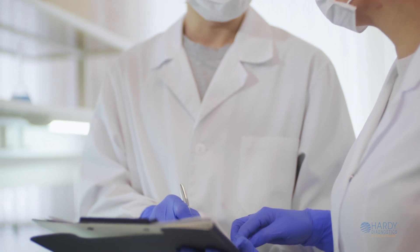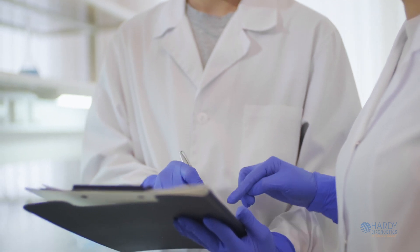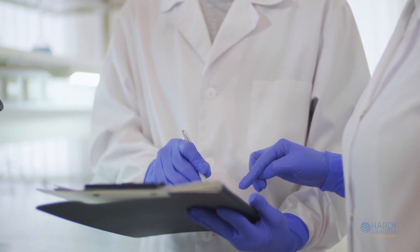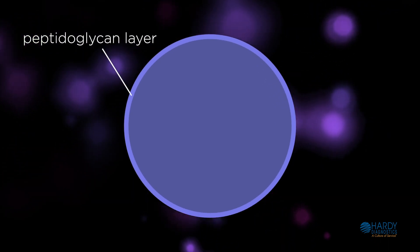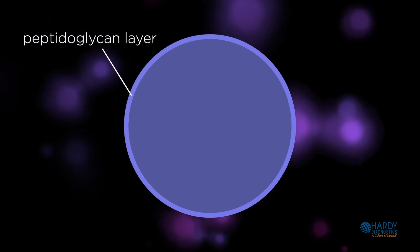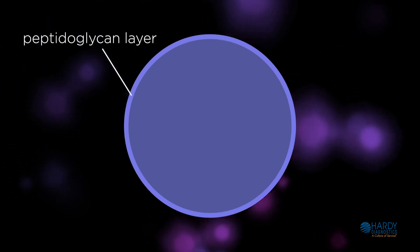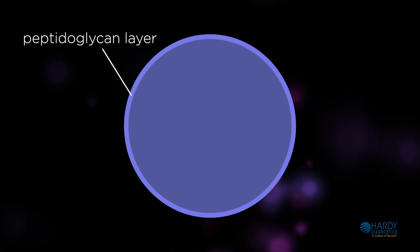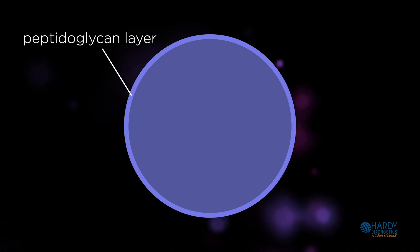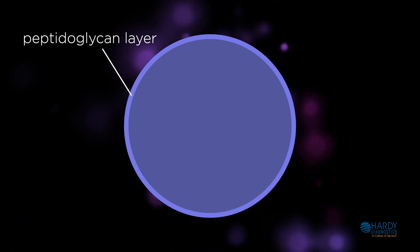The Gram stain differentiates cells based upon differences in the structure of the cell wall. The cell wall is made up of peptidoglycan, which consists of sugars and amino acids that form a layer around the plasma membrane of most bacteria.